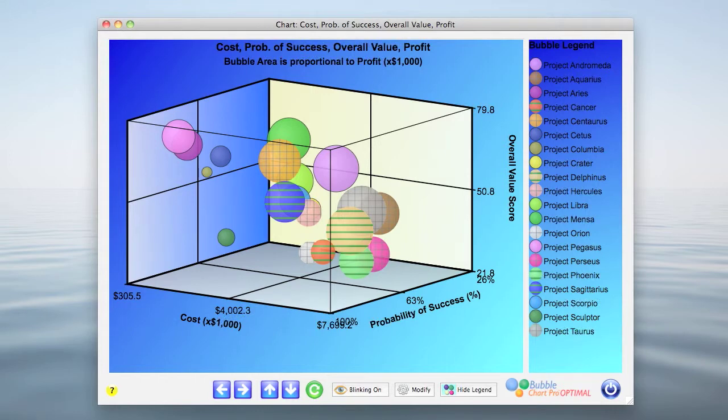As you can see, a 3D bubble chart can display four dimensions of data. In this bubble chart we see cost along the x-axis, probability of success along the y-axis, and the overall value score is calculated by the built-in prioritizer along the z-axis, or the vertical axis. And finally, the bubble size represents the profit for each individual project.